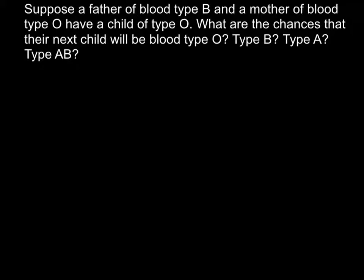In this video I want to talk about inheritance of different blood types. Today's problem is: suppose a father of blood type B and a mother of blood type O have a child of type O. What are the chances that the next child will be blood type O, type B, or type AB?